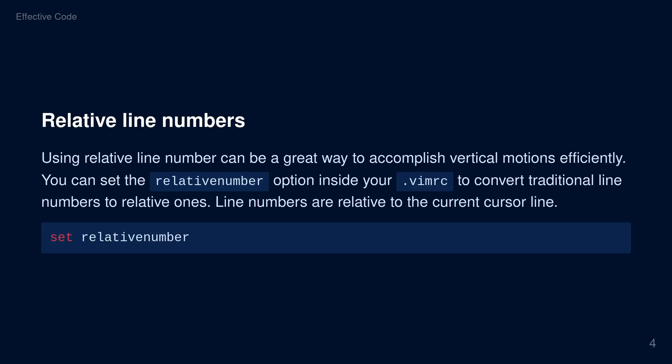2. Relative line numbers. Using relative line numbers can be a great way to accomplish vertical motions efficiently. You can set the relative number option inside your VIMRC to convert traditional line numbers to relative ones. Line numbers are relative to the current cursor line.